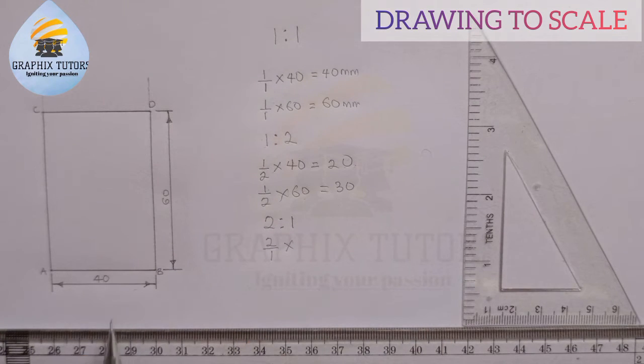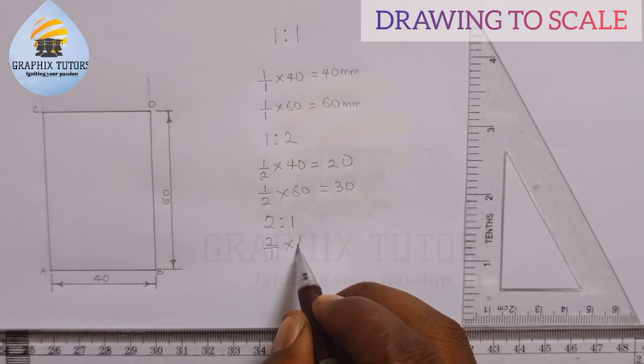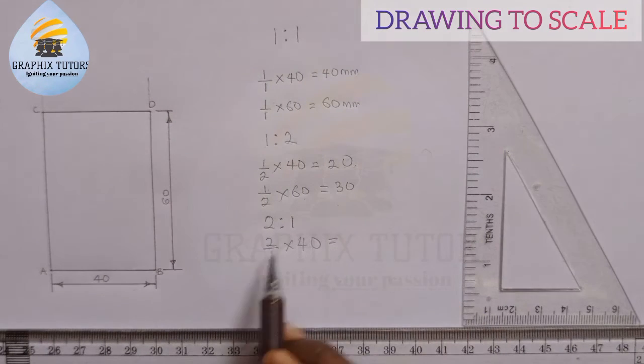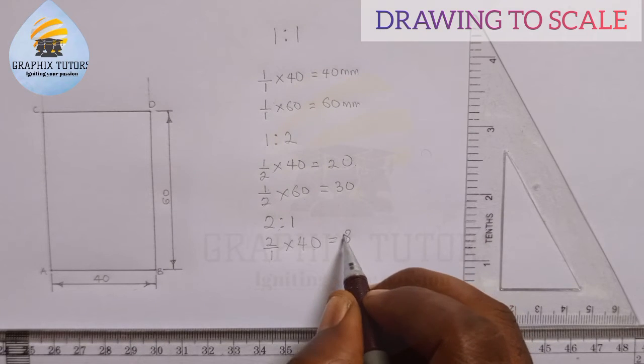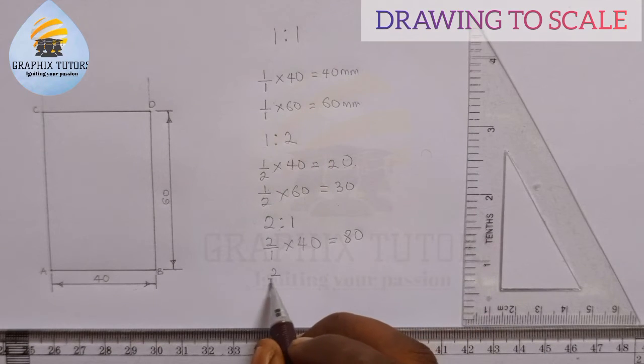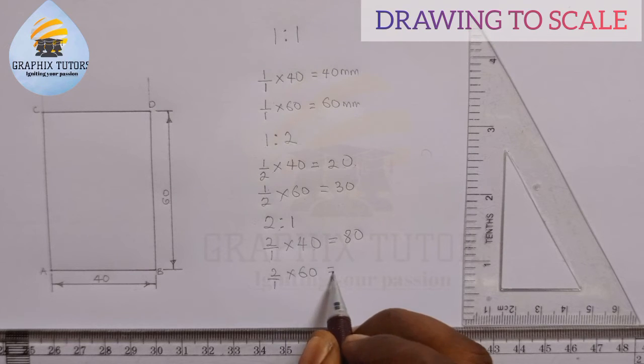Two over one of 40. So it means two over one is two multiplied by 40, that will give us 80. Two over one of 60 means two times 60 divided by one is still 120.